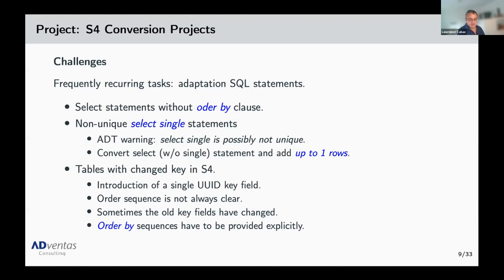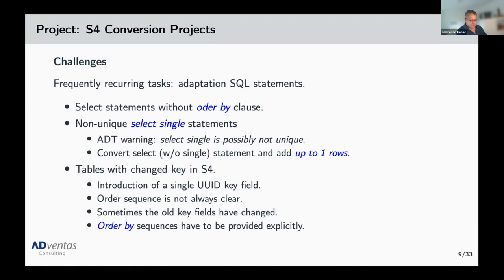Adding an ORDER BY clause is often unnecessary for regular SELECT statements because the table is already sorted afterwards. But SELECT SINGLE statements usually don't have an ORDER BY clause — in fact they can't. So you have to transform them. You look for ATC warning 'SELECT SINGLE is possibly not unique' — in that case you don't know which result you'll get. You must convert the SELECT SINGLE into a statement without SELECT SINGLE and add UP TO 1 ROWS, then add an ORDER BY clause.